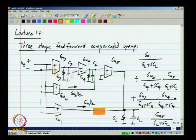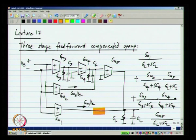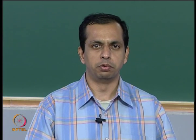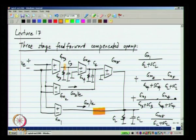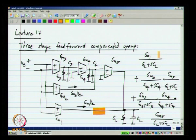I just wrote down the transfer functions without going through the analysis. I am assuming you are familiar enough with Laplace transforms and basic circuit analysis to do this. If not, please go ahead and refresh those things because this is quite easy — you have a current flowing into a parallel combination of conductance and capacitance and this is the kind of transfer function you get.